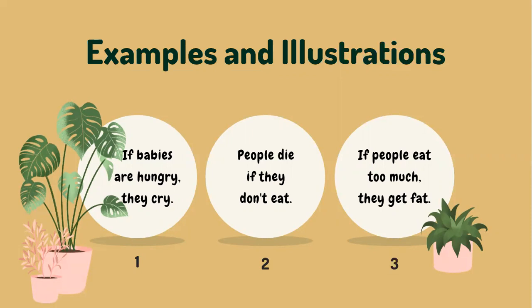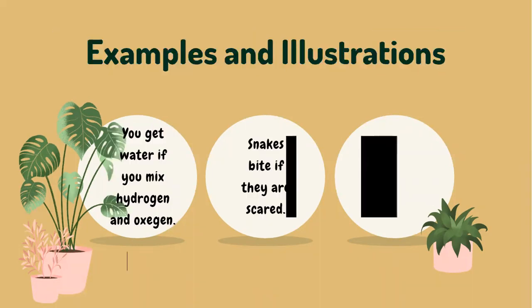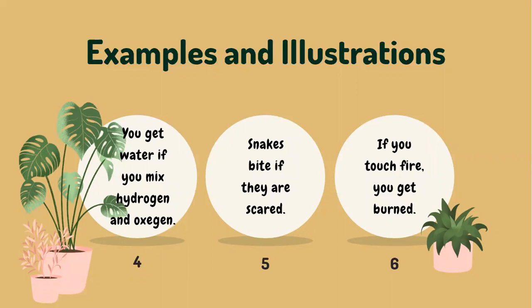Here are examples of zero conditional sentences: one — if babies are hungry, they cry; two — people die if they don't eat; three — if people eat too much, they get fat; four — you get water if you mix hydrogen and oxygen; five — snakes bite if they are scared; six — if you touch fire, you get burned.